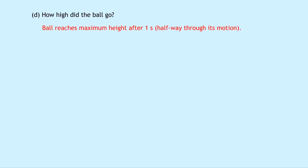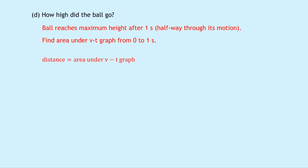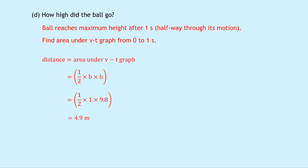Part D asks how high did the ball go. We need to find a magnitude of displacement. Remember, the way we find distance from a velocity time graph is to calculate the area under it. The ball reaches maximum height after 1 second, so we use motion from 0 to 1 second. Distance equals area under the VT graph — it's a triangle so we have half times base times height: half times 1 times 9.8, giving a vertical height of 4.9 metres.